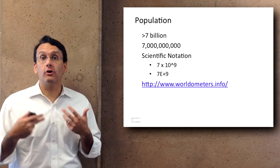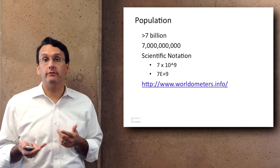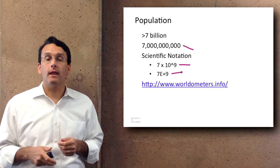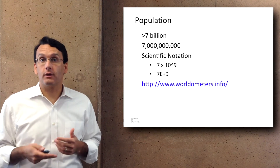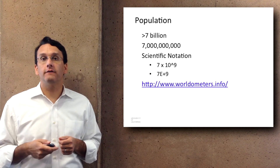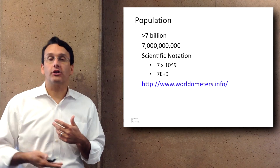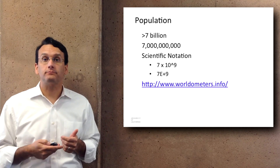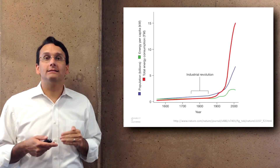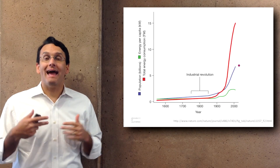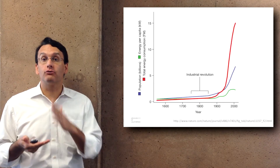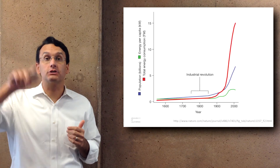Humans too are doing well — there are over seven billion humans now, written as 7,000,000,000 or in scientific notation as 7 × 10⁹. Worldometers.info has ongoing counters of many different aspects of the world, including human population, births, deaths, and species counts. A graph looking at human population as well as energy per capita — multiplied together to show total energy consumed by humans — shows it has really skyrocketed over the last 50 to 100 years.